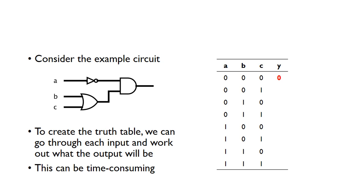For the first line in the truth table, we know the inputs are 0, 0, and 0. If we put a 0 into the NOT gate, we get a 1. Then 0 and 0 on the OR gate gives us a 0. With the AND gate we have a 1 and a 0 on the inputs, so we get a 0 on the output. You can work through all 8 possible input combinations this way, but you can imagine that starts to be time consuming.